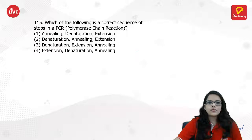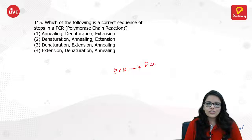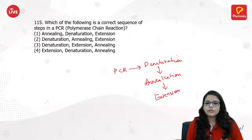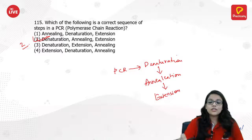Which of the following is the correct sequence of steps of PCR (polymerase chain reaction)? This is a basic question. PCR involves: denaturation — where the strands go apart, then annealing with the primer, and then extension of the primer. So: denaturation, annealing, extension.